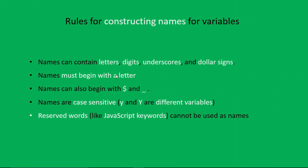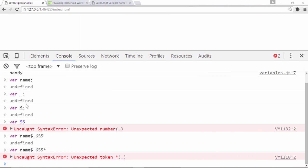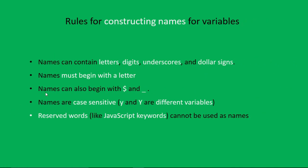Your variable name must begin with a letter, underscore, or dollar sign — I've already shown that. Names can also begin with dollar sign or underscore. If you're familiar with jQuery, it makes use of the dollar sign; if you know Underscore.js, that makes use of the underscore. Also important: names are case-sensitive. The lowercase 'y' and uppercase 'Y' are different variables.